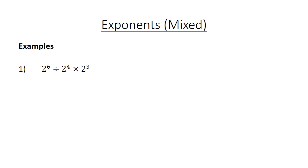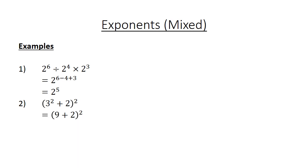Now we have mixed examples. 2 to the power of 6 divided by 2 to the power of 4, times 2 to the power of 3, equals 2 to the power of 6 minus 4 for division, and then plus 3 for multiplication, equals 2 to the power of 5. In brackets: 3 to the power of 2 plus 2 plus 2, close brackets, to the power of 2, equals 9 plus 2 to the power of 2, equals 11 to the power of 2, equals 121.